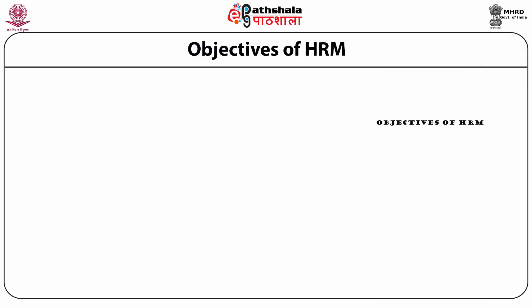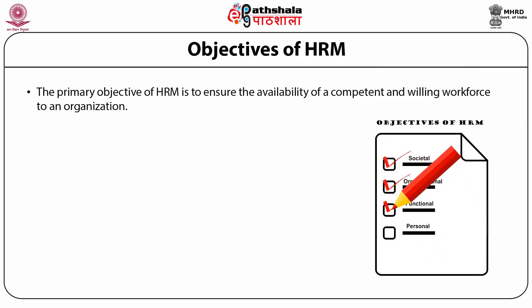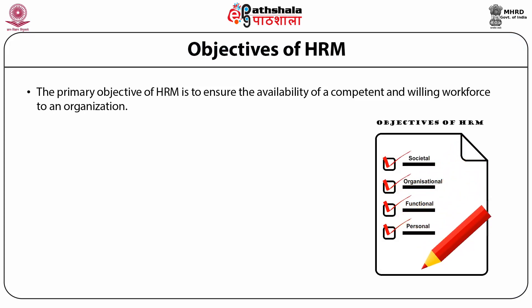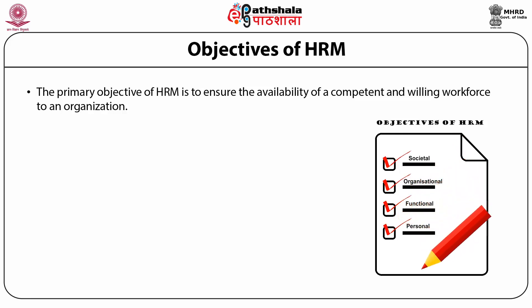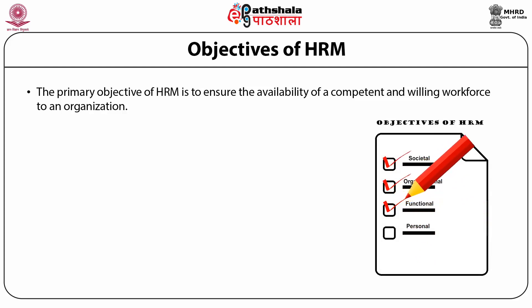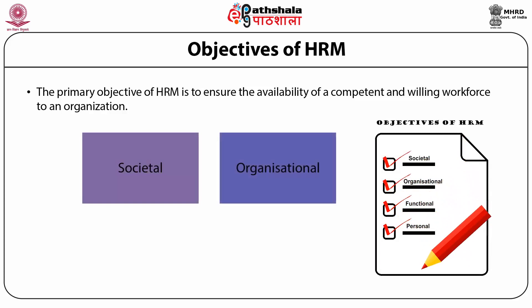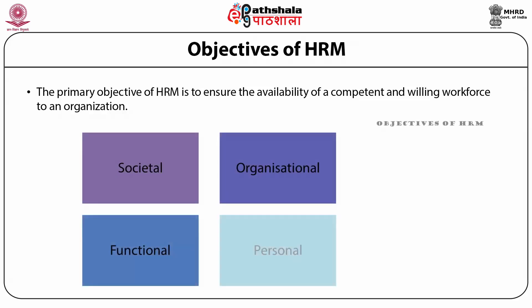Objectives of HRM: The primary objective of HRM is to ensure the availability of a competent and willing workforce to an organization — that is, having the right people at the right place at the right time so that jobs are done in an efficient manner. The various objectives of HRM are: societal objectives, organizational objectives, functional objectives and personal objectives.